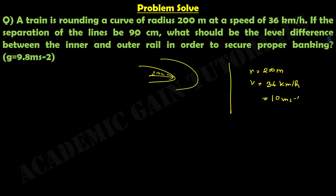If the separation of the lines is 90 centimeter — that is, the distance between the inner line and the outer line — we take this as x, so x equals 90 centimeter, which equals 0.9 meter. We have to find the level difference between the inner and outer line in order to secure proper banking.